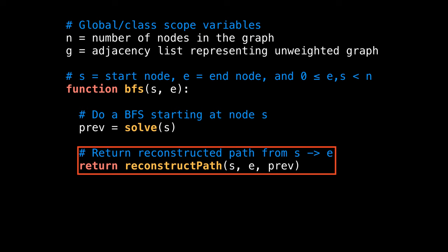Back inside the breadth first search method, take the output of the solve method which gave us the prev array and call the reconstruct path method.